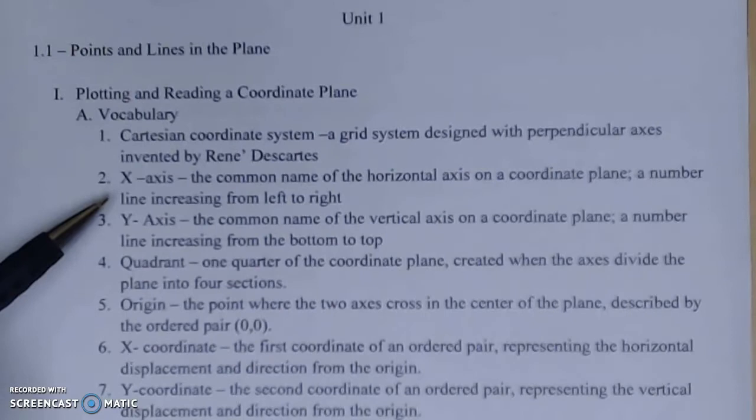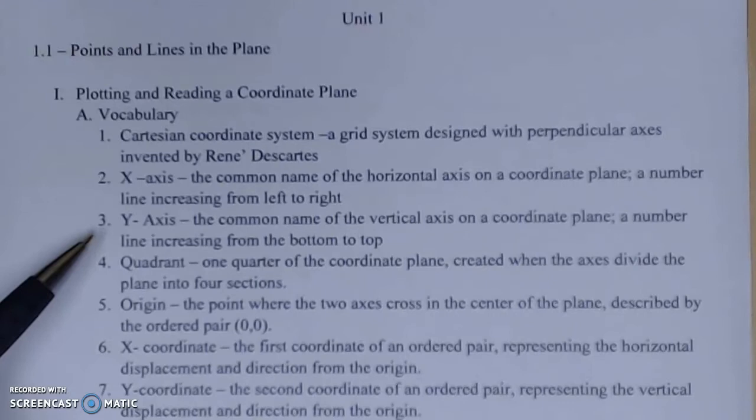On this coordinate system, we have things such as the x-axis, y-axis, quadrants, and origin. Our x-axis is the common name of the horizontal axis on a coordinate plane, a number line increasing from left to right. The y-axis is the common name of the vertical axis on a coordinate plane, a number line increasing from the bottom to the top.